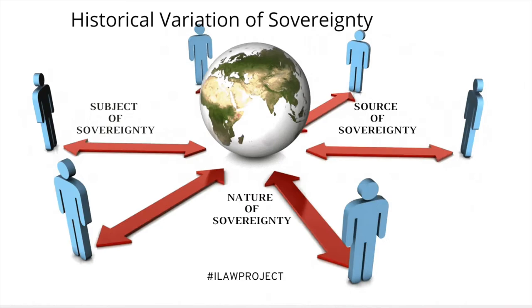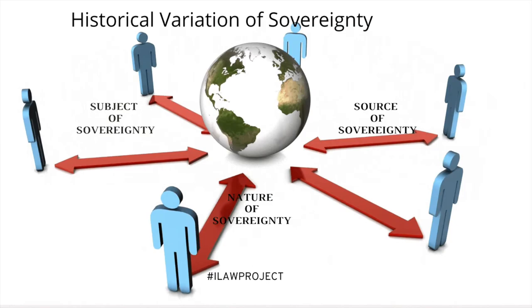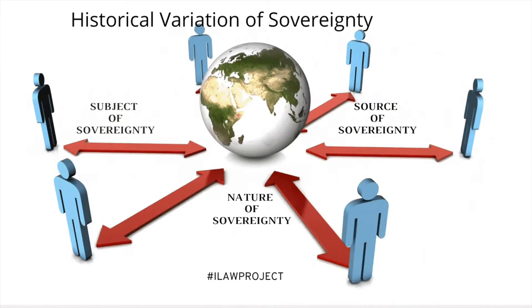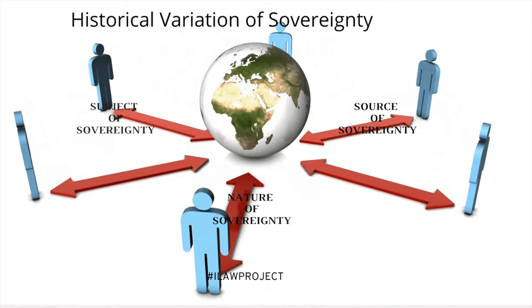Theoretically speaking, de jure and de facto sovereignty ought to exist simultaneously in a stable and internationally recognized state. But in reality, either of these situations may exist in isolation in political units. This is at the moment beyond the scope of this lecture, and we will attempt to explore this in one of our subsequent lessons.